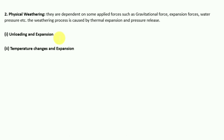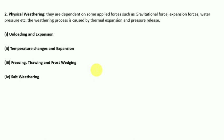The second type is temperature changes and expansion, which leads to diurnal changes in temperature, especially in desert regions where the outer layer expands and contracts more rapidly than the inner layer, setting up internal stresses and causing disintegration. The third type is freezing, thawing, and frost wedging — accumulation of water in cracks and crevices of rock, with freezing building up stress and causing weathering.